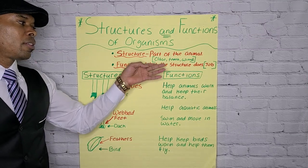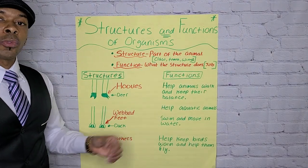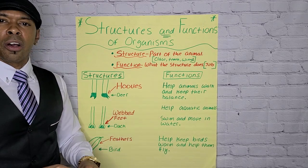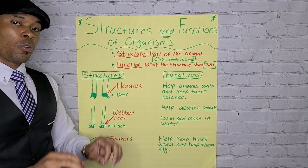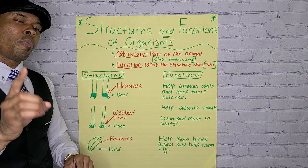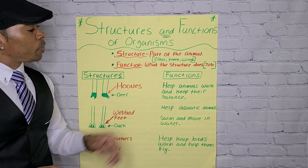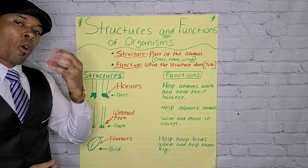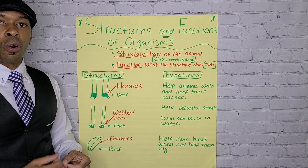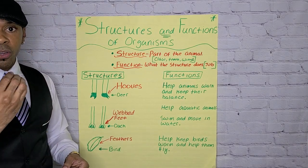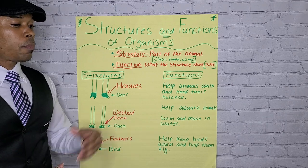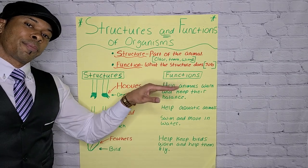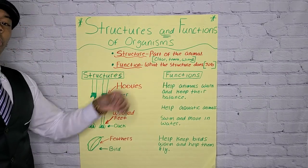I have three things listed right here on this anchor chart. The first one is a claw. You can use your claw for digging in the ground, searching for food in the ground, or you can use your claw for hunting. There are so many different things you can use a claw for. The second one is teeth. Teeth is also part of an animal. An animal can use its teeth for eating, chewing on something. We all need to eat, and animals need to eat as well. The third one is wings. Wings is also part of an animal.